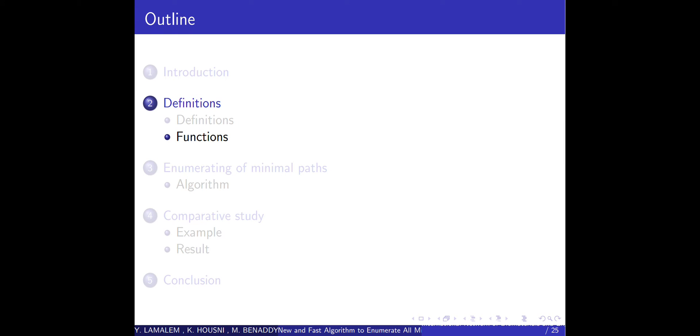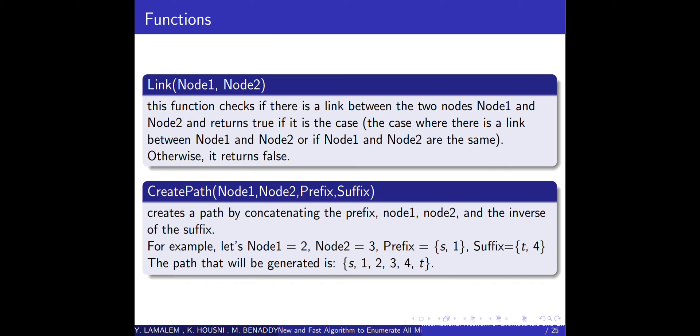Now we have functions. We are going to explain five functions that we will use in our proposed algorithm. First, we have a function called link that accepts two arguments: node1 and node2. This function checks if there is a link between the two nodes and returns true if it's the case, where there is a link between node1 and node2 or if node1 and node2 are the same node. Otherwise, it returns false.